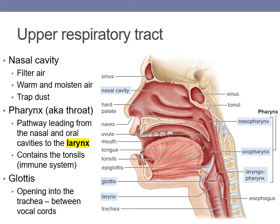Air then enters the pharynx, also known as the throat, which is a common pathway for food moving through the digestive system. There are tonsils located in the pharynx, which are part of the immune system. They contain a lot of white blood cells that can trap foreign substances and digest them by phagocytosis. In the respiratory system, the pharynx connects the nasal cavity to the larynx, where the vocal cords are located.